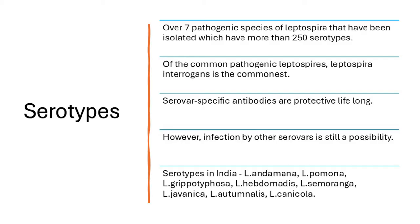There are seven pathogenic species of Leptospira and more than 250 serotypes. Many species are non-pathogenic to humans. Of those most pathogenic, Leptospira interrogans is the commonest. In India, common serotypes include L. andamana and L. pomona, among others. Once you get a natural infection with a particular serotype, you gain lifelong immunity specific to that antibody.